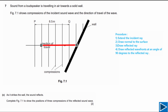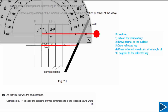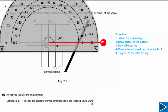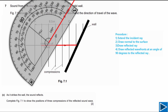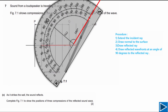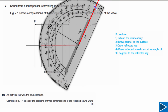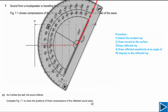For step two, draw the normal to the surface. Grab the protractor and align it with the wall surface. Draw the normal line at 90 degrees to the surface.